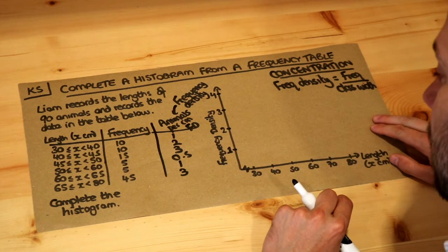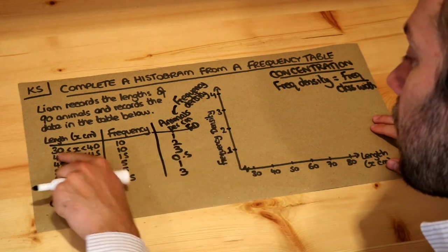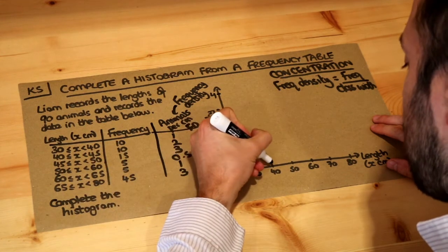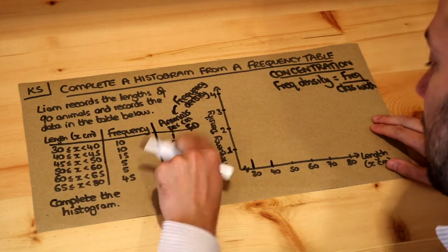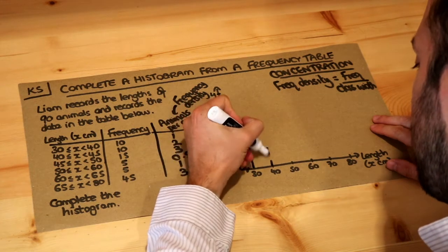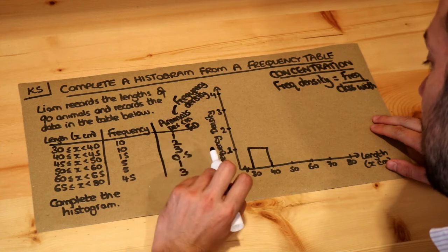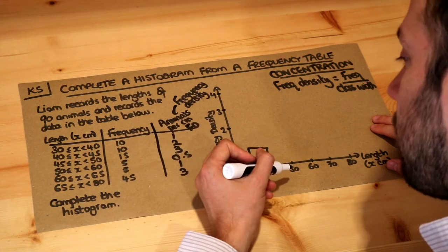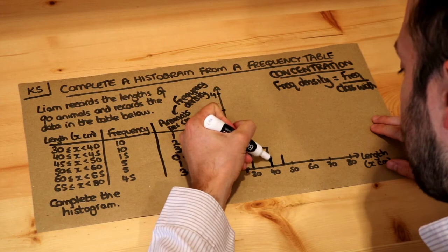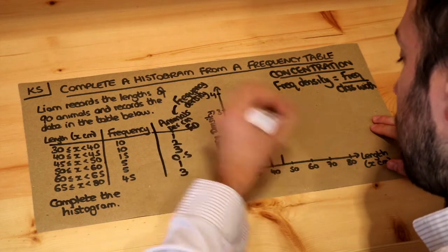And now we can plot each of these bars. So 30 to 40, that's a frequency density of 1, so that's going to go up to 1. 40 to 45, the frequency density is 2. We've got 2 animals per centimetre. So 40 to 45, that's 45, that's 40, that's going up to 2.